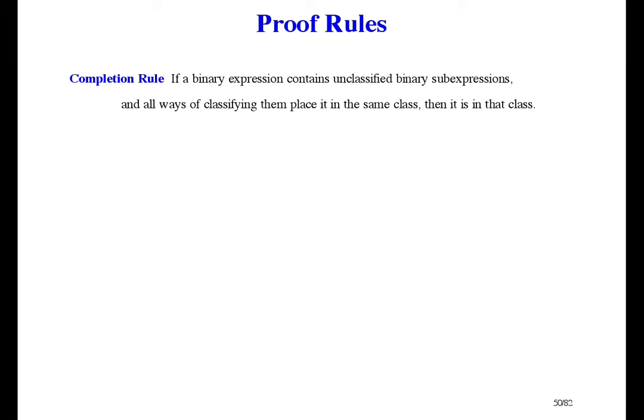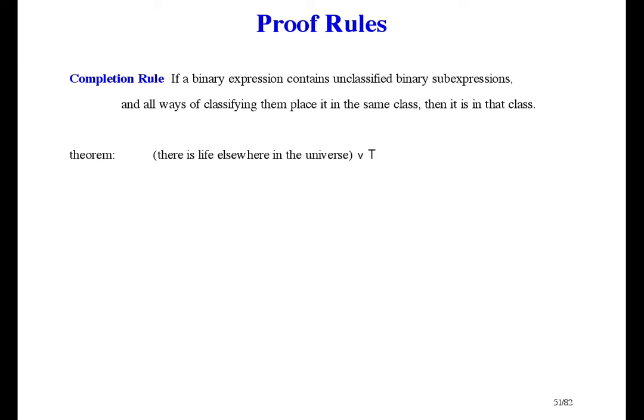Next comes the completion rule. It says: if an expression contains unclassified sub-expressions, and all ways of classifying them place it in the same class, then it is in that class. If you don't know what the operands are, you might still be able to tell what the whole expression is. For example, consider 'there is life elsewhere in the universe, or true.' If there's life elsewhere, that's true or true, which is true. If there isn't life elsewhere, that's false or true, which is still true. So either way it's true, and the completion rule says it's a theorem.